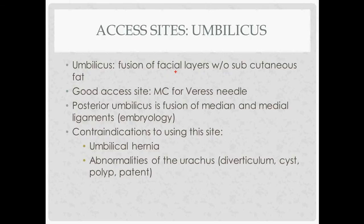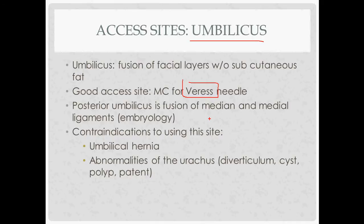There are different sites to access the abdomen, and the most common is the belly button — a fusion of fascial layers with little subcutaneous fat, making it a good access site and the most common place to use the Veress needle. The posterior part is made up of the median and medial ligaments — remnants of embryology. Contraindications to using the belly button include an umbilical hernia or problems with the urachus, which connects the fetal bladder to the belly button; a diverticulum there would preclude its use.